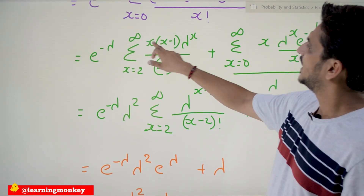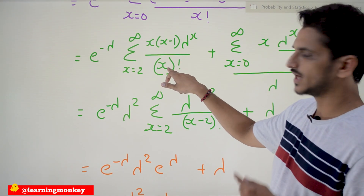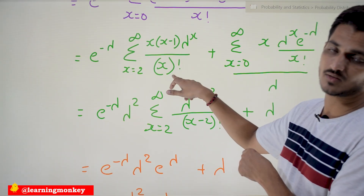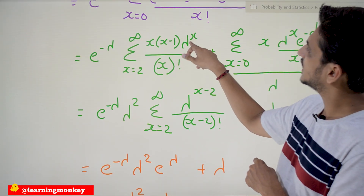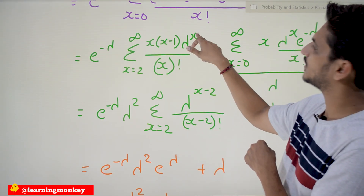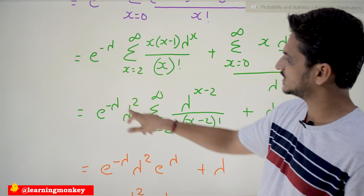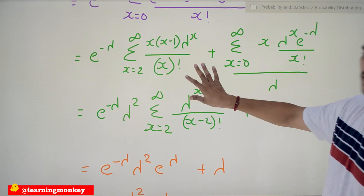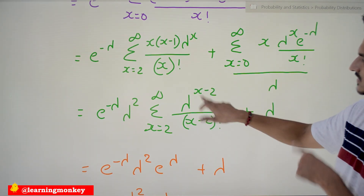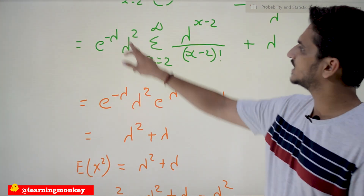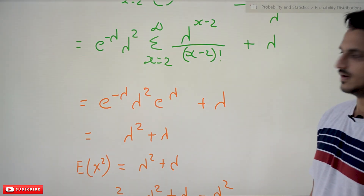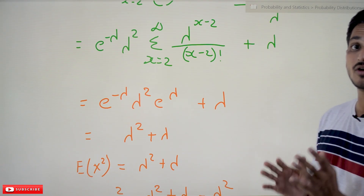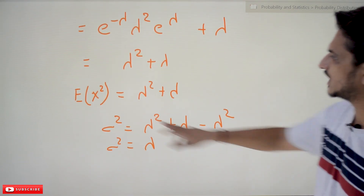For the first sum: x(x−1) / x! simplifies because x! = x · (x−1) · (x−2)!, so x(x−1) cancels, leaving (x−2)! in the denominator. Taking λ² out from λ^x gives λ^(x−2), so the sum becomes e^(−λ) · λ² · Σ (x=2 to ∞) λ^(x−2) / (x−2)!. This is the expansion of e^λ, so e^(−λ) · λ² · e^λ = λ². Therefore E[X²] = λ² + λ.